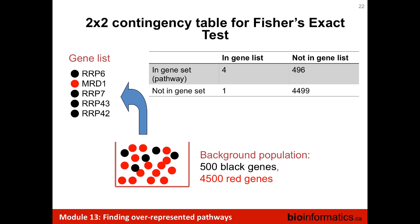This becomes especially acute if you're only interested in transcription factors — for example, looking at ChIP-seq or transcription factor binding data. Your search space is suddenly 1,800 transcription factors instead of 18,000 genes. Any pathway analysis that includes only transcription factors will yield transcriptional processes unless you restrict yourself to this predefined search space.